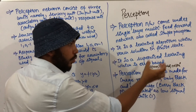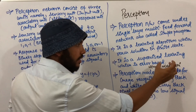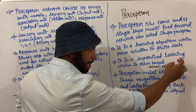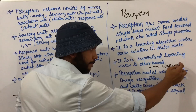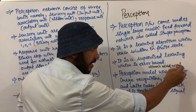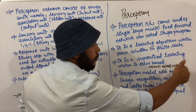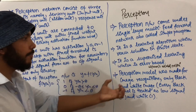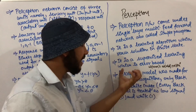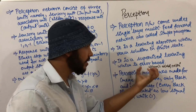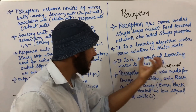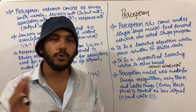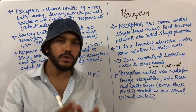Using the Hebb rule, the new weight is the sum of the old weight plus the learning rate multiplied by the input signal.